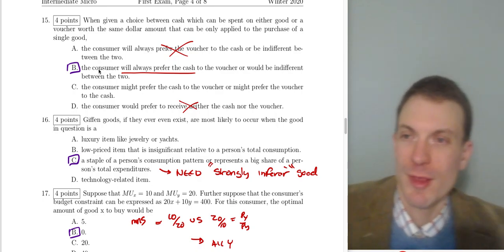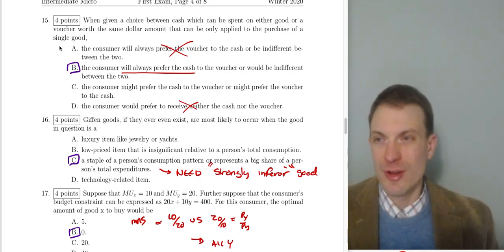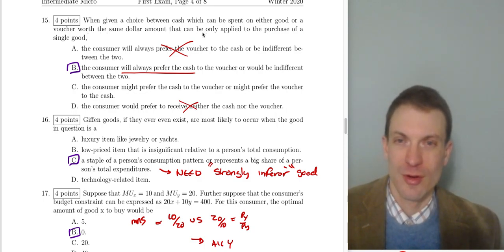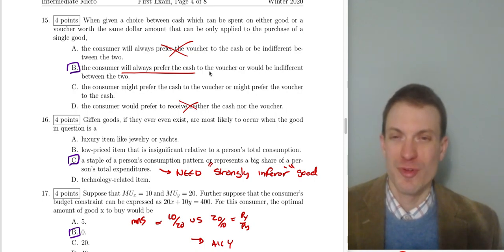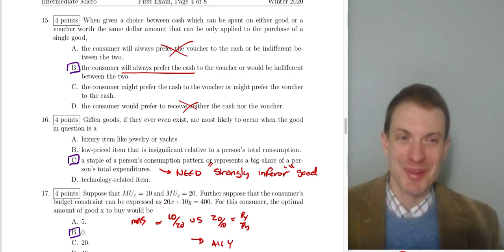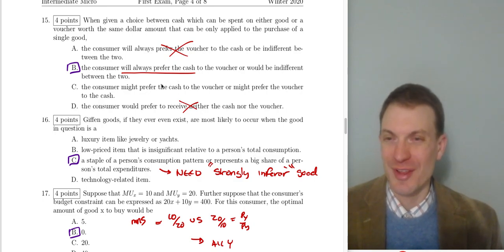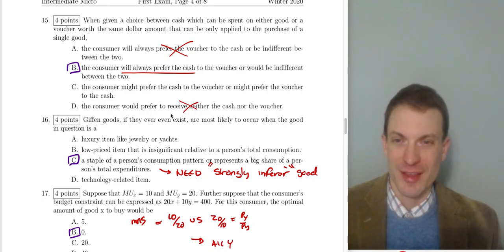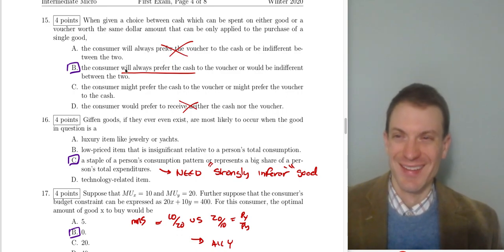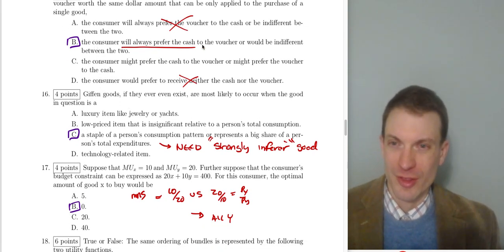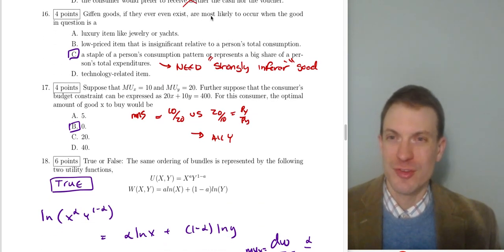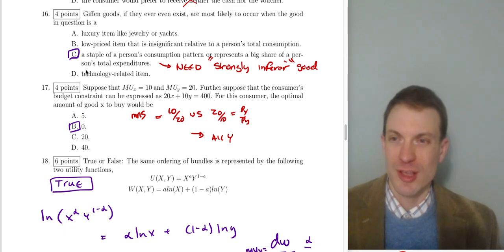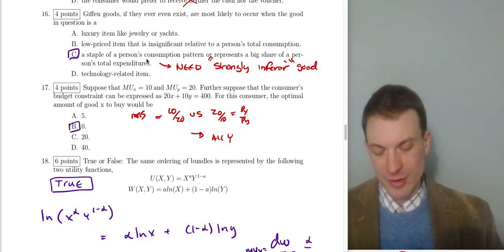Question fifteen: when given a choice between cash and a voucher of equal dollar value restricted to one good, the consumer prefers cash or is indifferent. They'd be indifferent in the situation like the bookstore example. The consumer always just wants cash — option D saying the consumer always prefers the voucher is wrong. Question sixteen: Giffen goods, if they exist, are most likely to occur when the good is a staple — a strongly inferior good. The Giffen good story: price rises, you buy more, because rising prices make you relatively poorer, and when you're poorer you buy more of the inferior good.